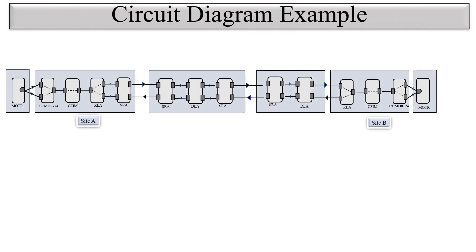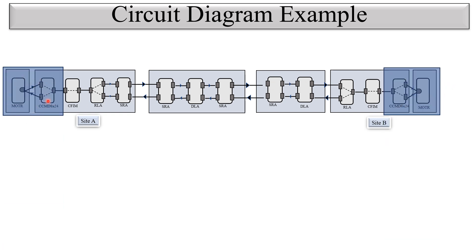Using this circuit diagram as a reference, you can see the point-to-point connectivity of one lambda. The lambda is produced by this MOTR card, travels from Site A to Site B, and the same lambda comes back and terminates at Site B. This is the signal flow, and we will focus on the transponder/muxponder to CCMD8 Cross 24 connectivity.